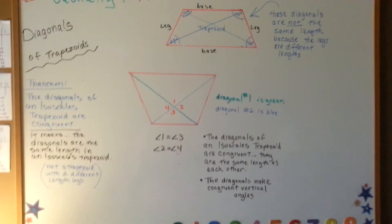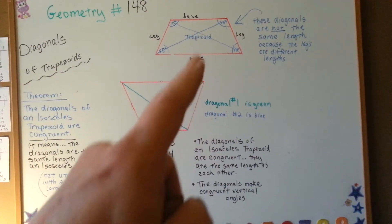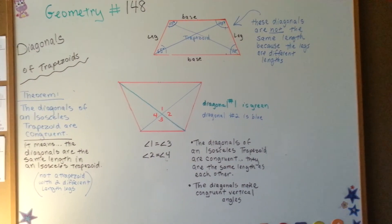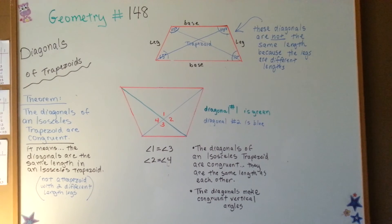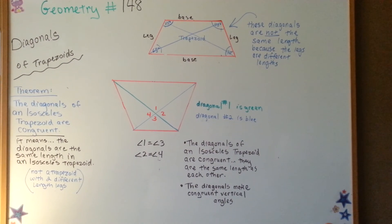That is how you draw the diagonals for a trapezoid. For an isosceles it's this way, and for a regular one it's that way. Our next video is going to be about finding the area in trapezoids. I'll see you there.